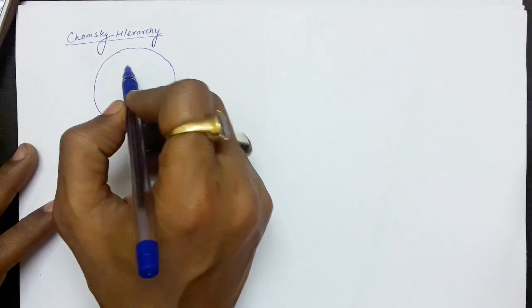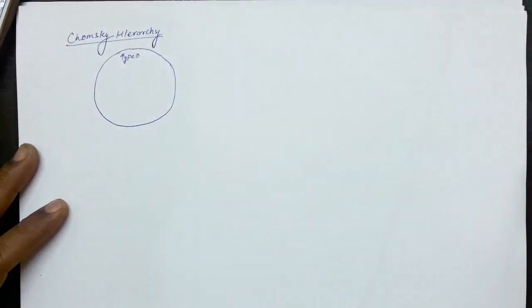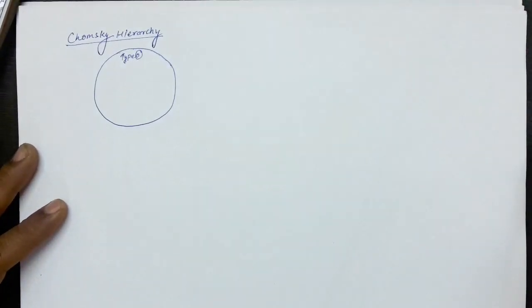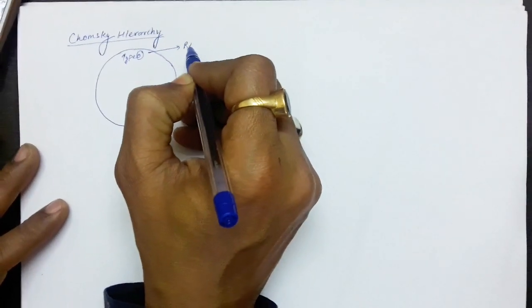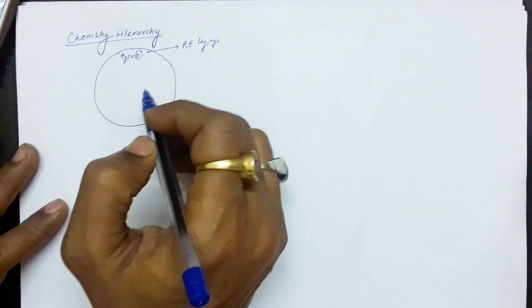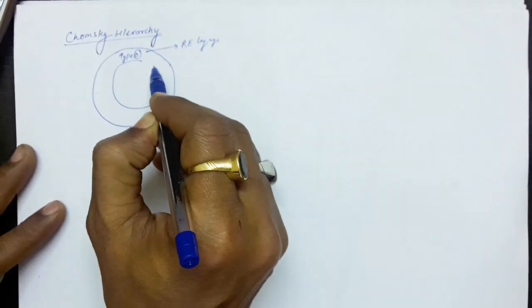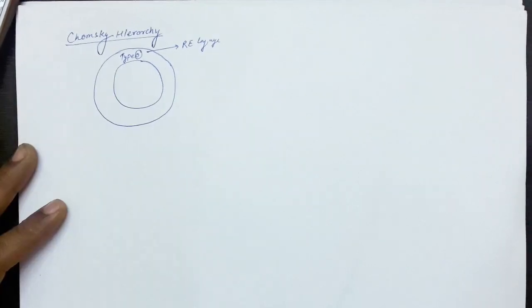In this lecture, we will learn about the Chomsky hierarchy and see some examples. There is a bigger circle representing Type 0 languages. Type 0 is the unrestricted grammar, also known as the recursively enumerable language. A subset of all languages will be in Type 0 because we have not applied any restriction.